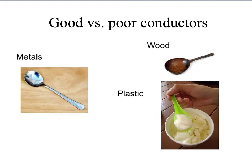Not all materials conduct heat equally well. Metals, for example, are very, very good conductors of heat, and this is easy to check — just stir your coffee and you'll see how the spoon gets hot really fast. That's why we make pans with metal. On the other hand, wood and plastic are not very good conductors of heat. That's why we make wooden spoons to stir food while cooking — we can stir without getting burnt.